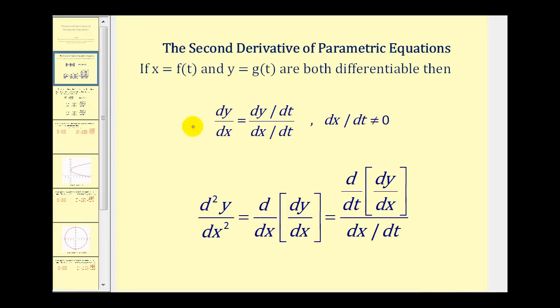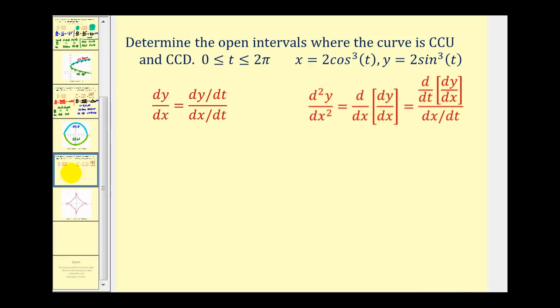You may want to pause the video here to review the formulas for the first and the second derivative of parametric equations, but we're going to go ahead and jump to our example. We want to determine the open intervals for which the curve is concave up and concave down on the closed interval from zero to two pi. So we'll start by finding the first derivative.